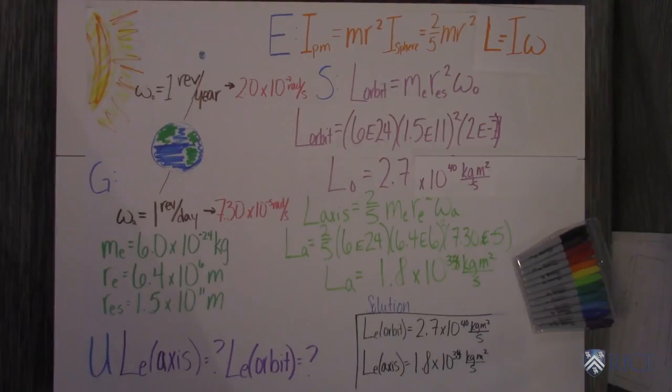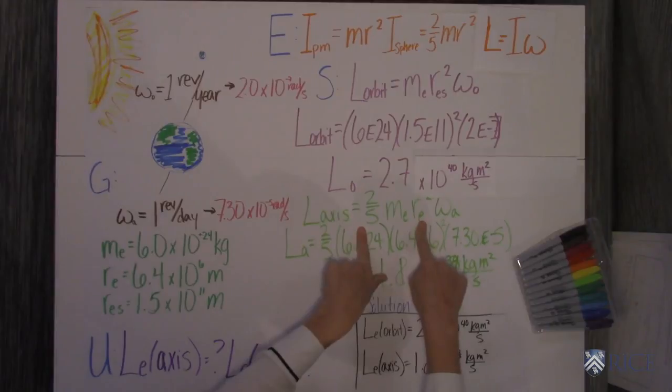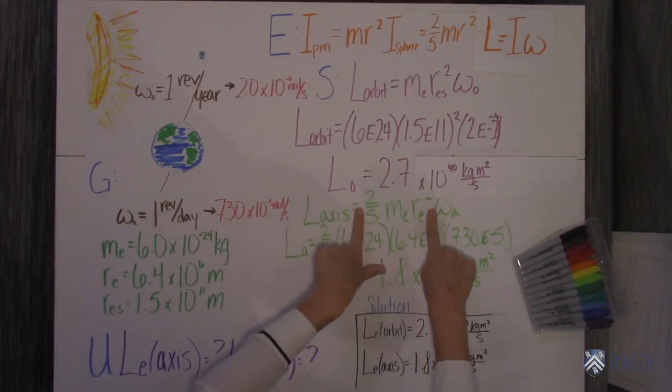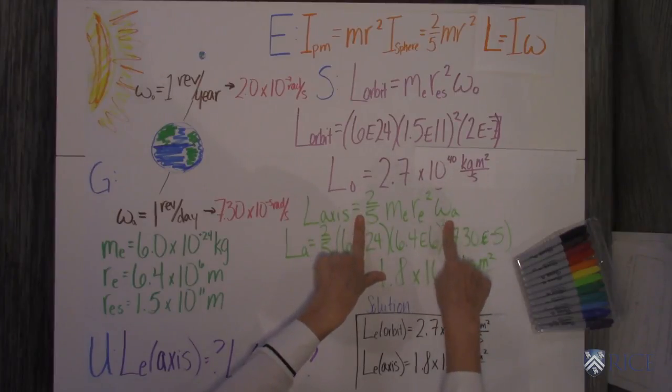Do the same process with the Earth on its axis, right? We know it's spinning. It's a spinning sphere. So we put this is I, this is your moment of inertia, two fifths mr squared, and then the angular velocity of the Earth spinning on its axis.